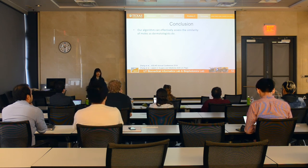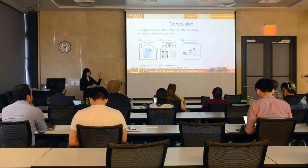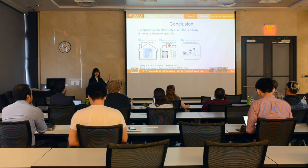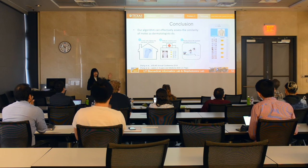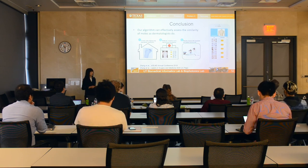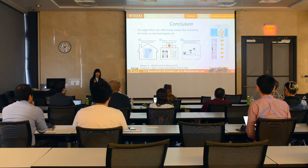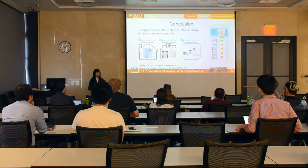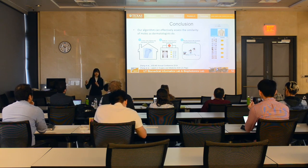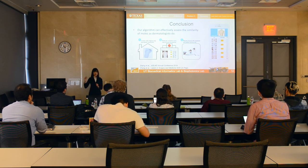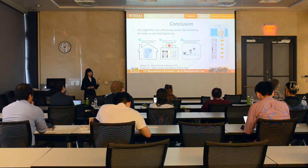Once we have the algorithm to assess similarity, there are multiple applications. For example, we can rank the moles from the most dangerous — having the highest probability of being melanoma — to the least dangerous, so dermatologists can check the most dangerous ones first during appointments. Also, if we can evaluate similarity accurately, we can evaluate the evolution of moles over time, which is helpful for melanoma screening. In addition, if we have a database including moles with no pathology, we can use case-based reasoning to analyze a new mole using the similarity algorithm.